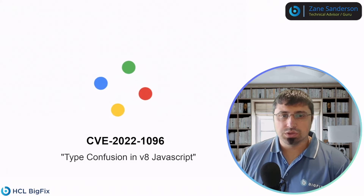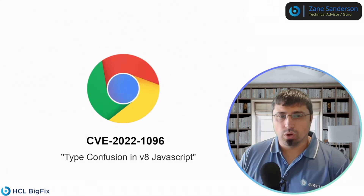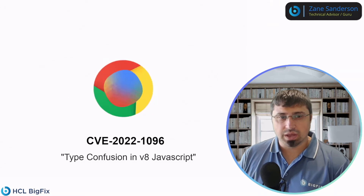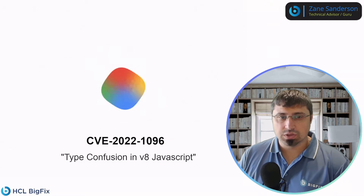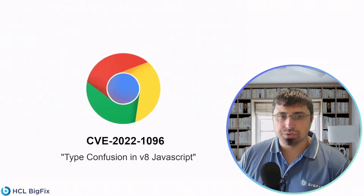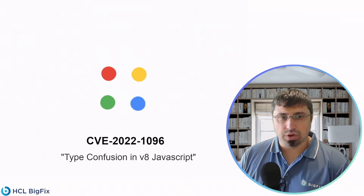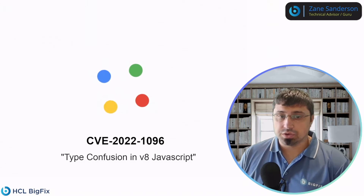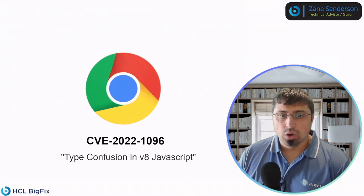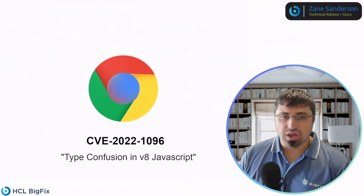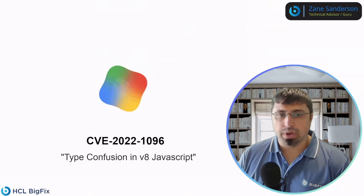Over the weekend, Google released a new Chrome version 99. This version patches the latest actively exploited vulnerability CVE-2022-1096. With only a few days before Chrome 100 is set to drop, Google is seeing this as a high severity vulnerability and acted quickly to patch it.